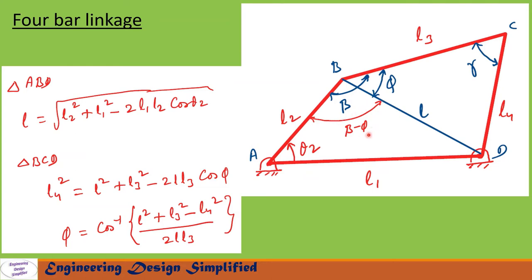The angle from here to here, let us call beta, so the angle from here to here will be beta minus phi. Now let us apply the cosine rule for triangle ABD to find l. So l equals the square root of l2 squared plus l1 squared minus 2·l1·l2·cos(theta 2). Using this equation we can find l.